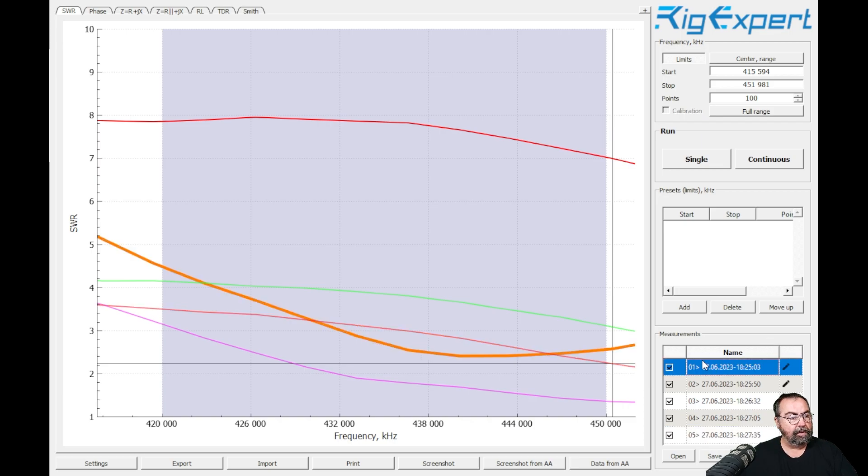So first of all, the orange line, that is the Abris fully extended. That's below three for about half the band, a little more than half the band, the upper half of the 70 centimeter band.